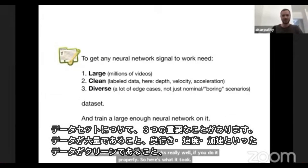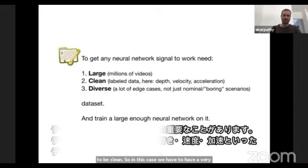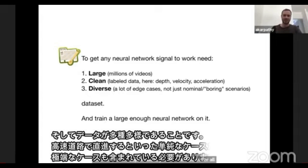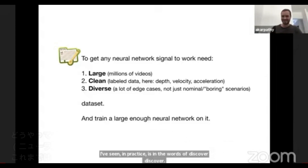The first component you need is an incredibly good dataset. I believe it has to have three critical properties: it has to be large — in the millions of examples; it needs to be clean, with a very clean source of depth, velocity, and acceleration for all these cars; and it must be diverse, covering not just highway driving but all the edge cases and difficult scenarios.